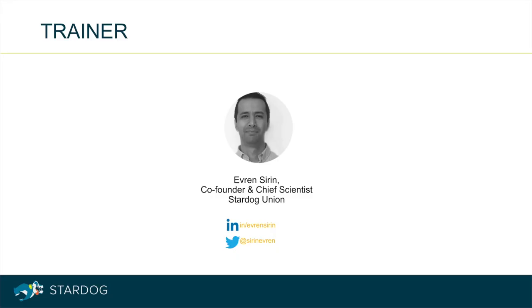Let me start by introducing myself. My name is Eran Sirin. I'm a co-founder of Stardog Union and the Chief Scientist. I've been working on semantic technologies and knowledge graphs since the early 2000s and participated in the standardization efforts for these technologies over the years.